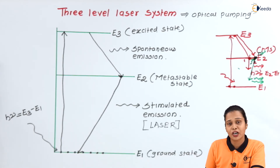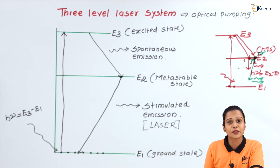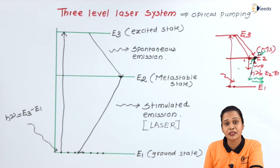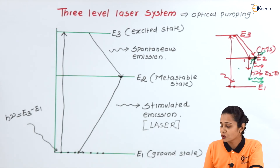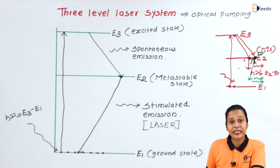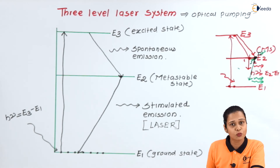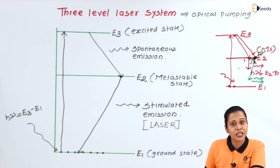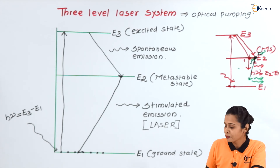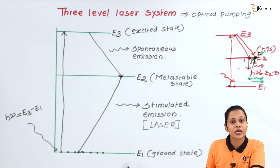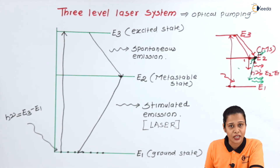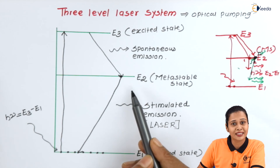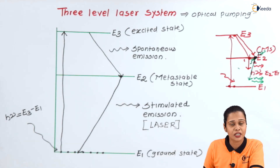There are two important requirements for the laser. The first one is population inversion, and the second one is a metastable state — if there is a metastable state, then population inversion can be achieved. Here we have a metastable state, but in case of the three level laser system, we have to achieve population inversion between the ground state and the metastable state E2. It is very difficult to achieve population inversion because the ground state is a more stable state, and millions of particles prefer to stay there. That is why achieving more particles in the excited state than the ground state is quite difficult, and the three level laser system is not that much beneficial.